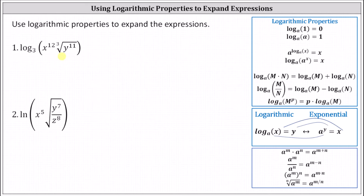Let's begin by writing the cube root of y to the 11th using a rational exponent. Recall the nth root of a to the power of m is equal to a to the power of m divided by n. Notice the index is the denominator of the rational exponent, and the exponent on a is the numerator. This indicates the cube root of y to the 11th is equal to y to the power of 11 thirds.